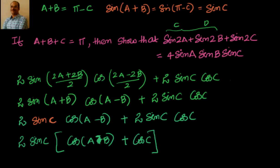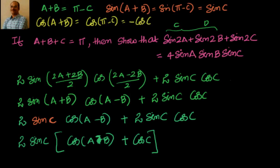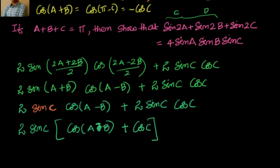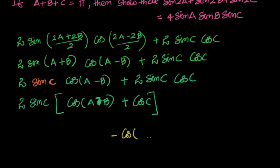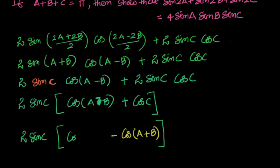Now let's find what cos c is. Applying cos on both sides of a plus b equals pi minus c: cos(a+b) equals cos(pi minus c), which equals minus cos c. So cos c equals minus cos(a+b). Substituting, this becomes 2 sin c into (cos(a minus b) minus cos(a plus b)).